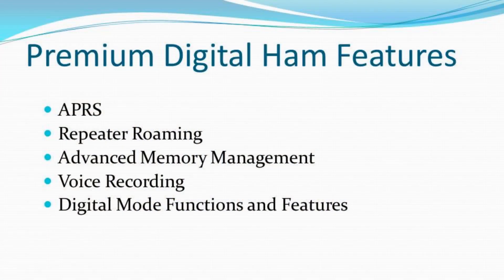Radios in this category will include many of the ham features already mentioned, plus APRS — Automated Packet Reporting System — reception and transmitting, repeater roaming, advanced memory management, voice recording, and the features of their respective digital mode. Radios in this category include the AnyTone 878UV2 for DMR at about $330, the Yaesu FT5D for C4FM at about $430, the ICOM IC-52A for DSTAR at about $600, and the new Kenwood THD75A at a whopping $750. AnyTone, Yaesu, ICOM, and Kenwood carry a significant brand premium.